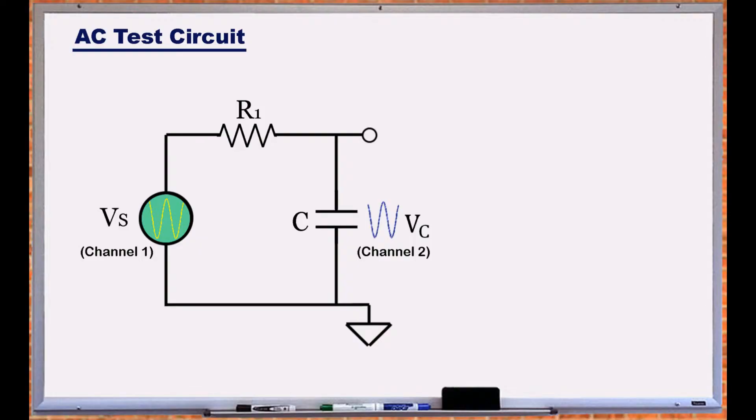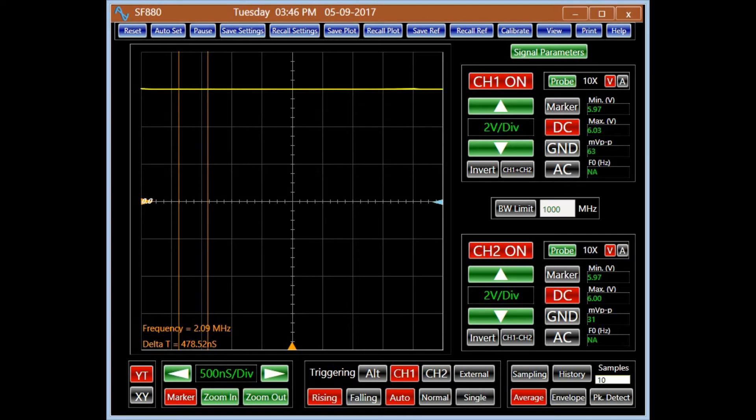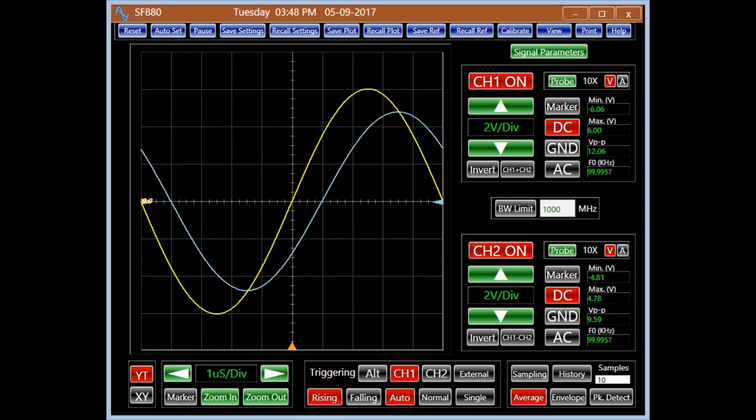In an RC circuit, Vc is equal or less than Vs and lags it by a phase between 0 to 90 degrees. At DC these signals have the same value. As the signal frequency increases, the reactance of the capacitor decreases resulting in a smaller Vc and a bigger lag.